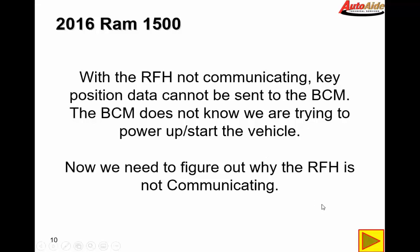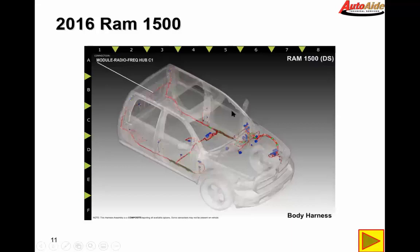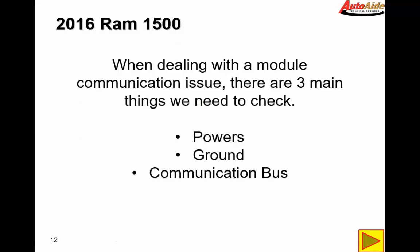So now we need to figure out why the RFH is not communicating. In order to do that, first we're going to have to locate the module. As you can see in the diagram, it's indicating that the radio frequency module is behind the rear passenger seat on the rear wall. Unfortunately, you're going to have to remove the actual back seat as it does not fold down in this truck.